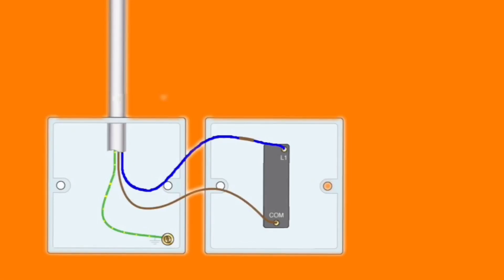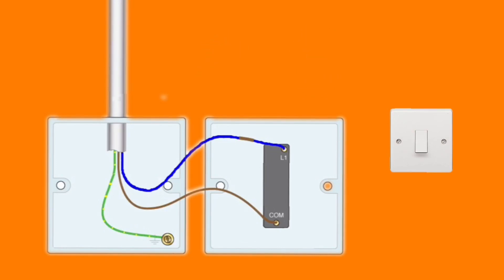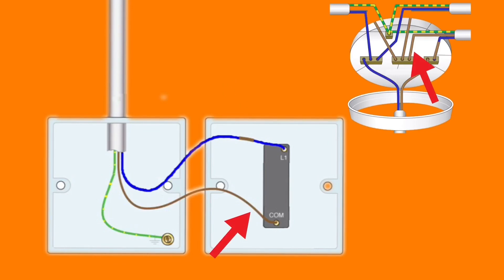In this video presentation we're going to look at the connections for converting a one-way lighting circuit - where one switch turns a light on and off - to have control via two positions by converting it to two-way switching. The current switch drop from the ceiling rose is in blue, brown, and green and yellow, so we've got twin and CPC cable. The blue is not a neutral; it's a switching line conductor identified with brown sleeving at both ends, and we bring down a permanent line connection on the brown conductor connected in common.